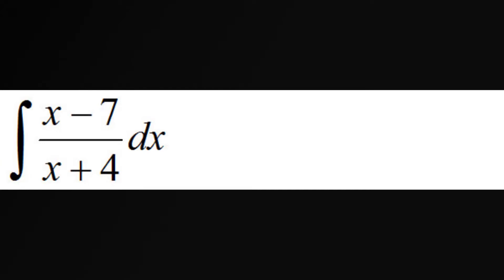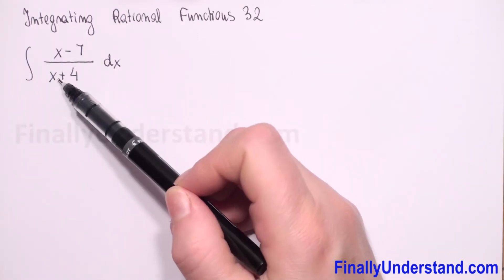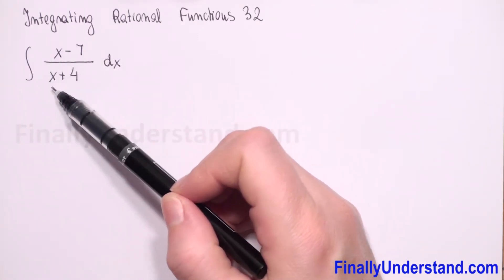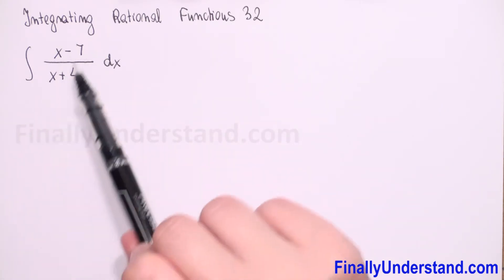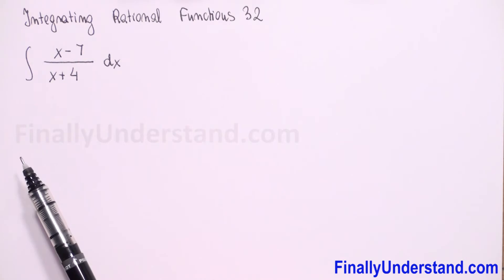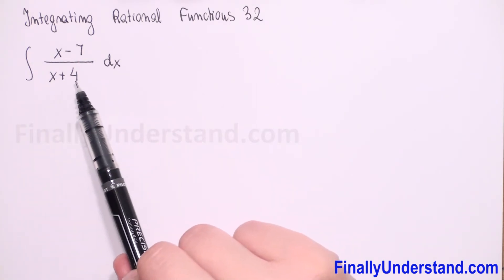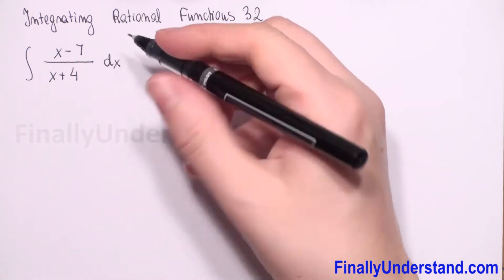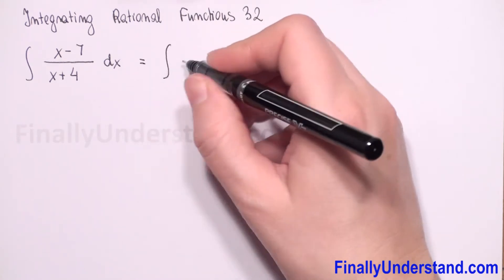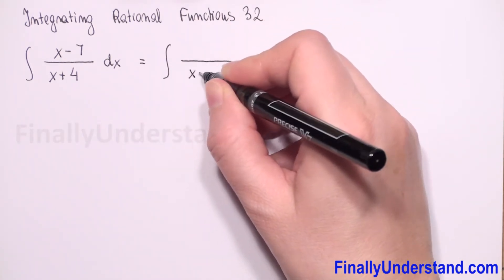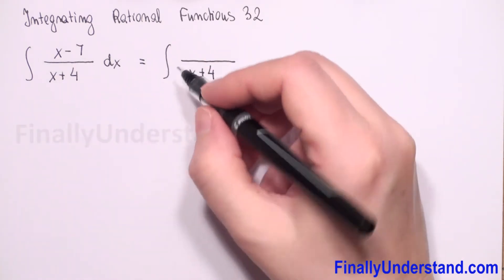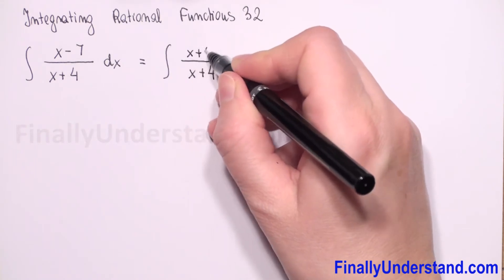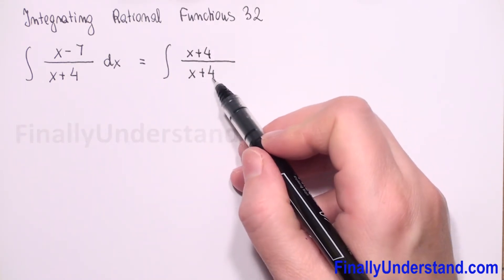We have the integral of a rational function. Because we have the same degree in the numerator and denominator — x is in the first power — we can use long division to rewrite this rational expression. Or, because we have x plus 4 in the denominator, we can rewrite the expression by putting x plus 4 first.